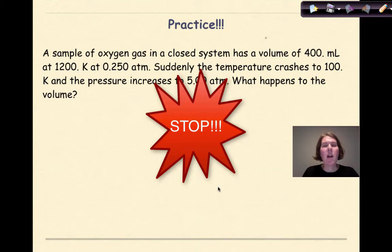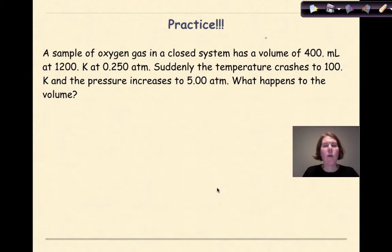Now what I want you to do is stop, plug the known variables into your formula and solve for the unknown variable and see how you do. Welcome back. Let's see how you did. A sample of oxygen gas in a closed system has a volume of 400 milliliters at 1200 K at 0.25 atmosphere. Suddenly the temperature crashes to 100 K and the pressure increases to 5 atmospheres. What happened to the volume?